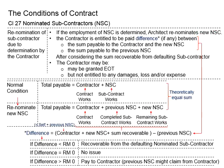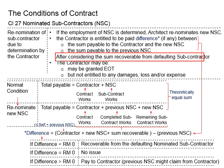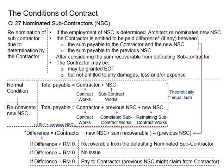Under these circumstances, in terms of payment, the contractor is entitled to be paid the differences between the sum payable to the contractor and the new nominated subcontractor, and the sum payable to the previous nominated subcontractor. This will be after consideration of the sum recoverable from the defaulting subcontractor. If there are no differences, no payment should be entitled to the contractor.